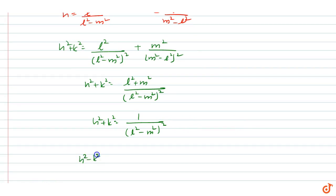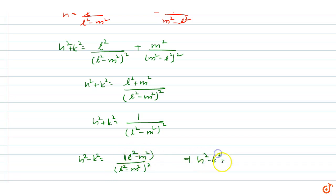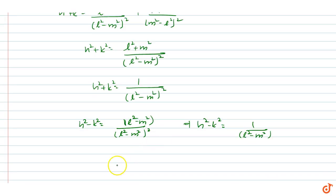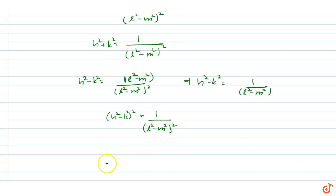Next, we compute h squared minus k squared. This equals 1 over (l squared minus m squared) squared multiplied by (l squared minus m squared), which gives h squared minus k squared equals 1 over (l squared minus m squared). Squaring both sides, we get (h squared minus k squared) squared equals 1 over (l squared minus m squared) squared.